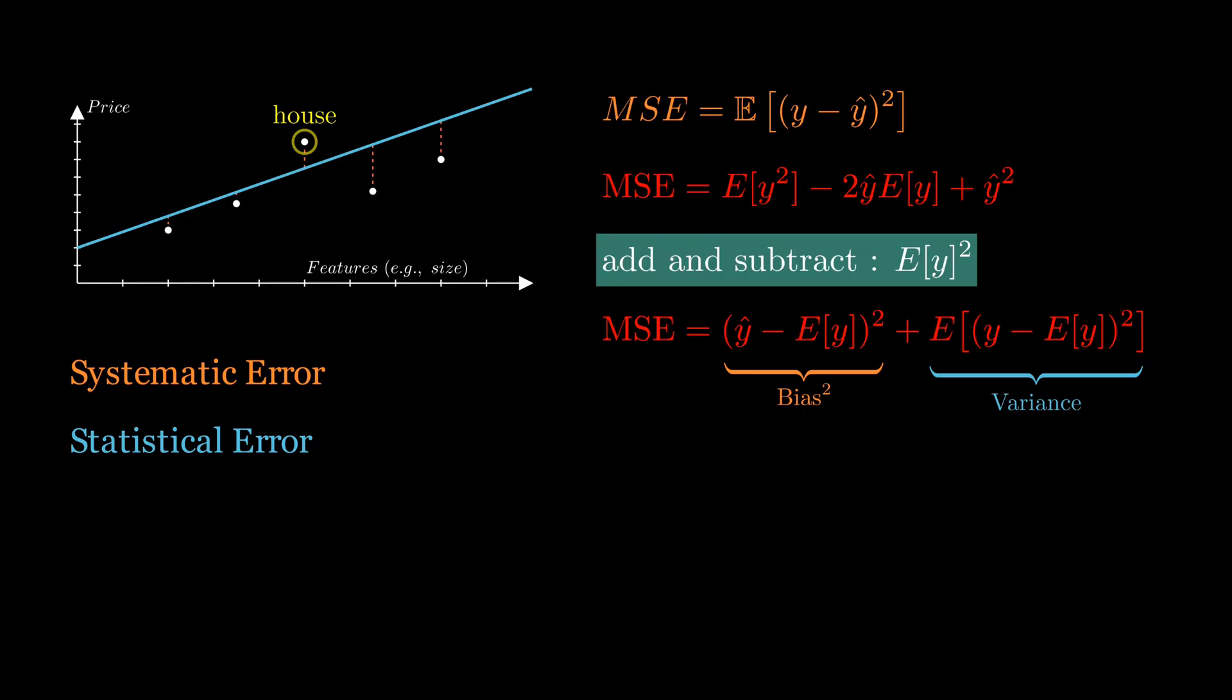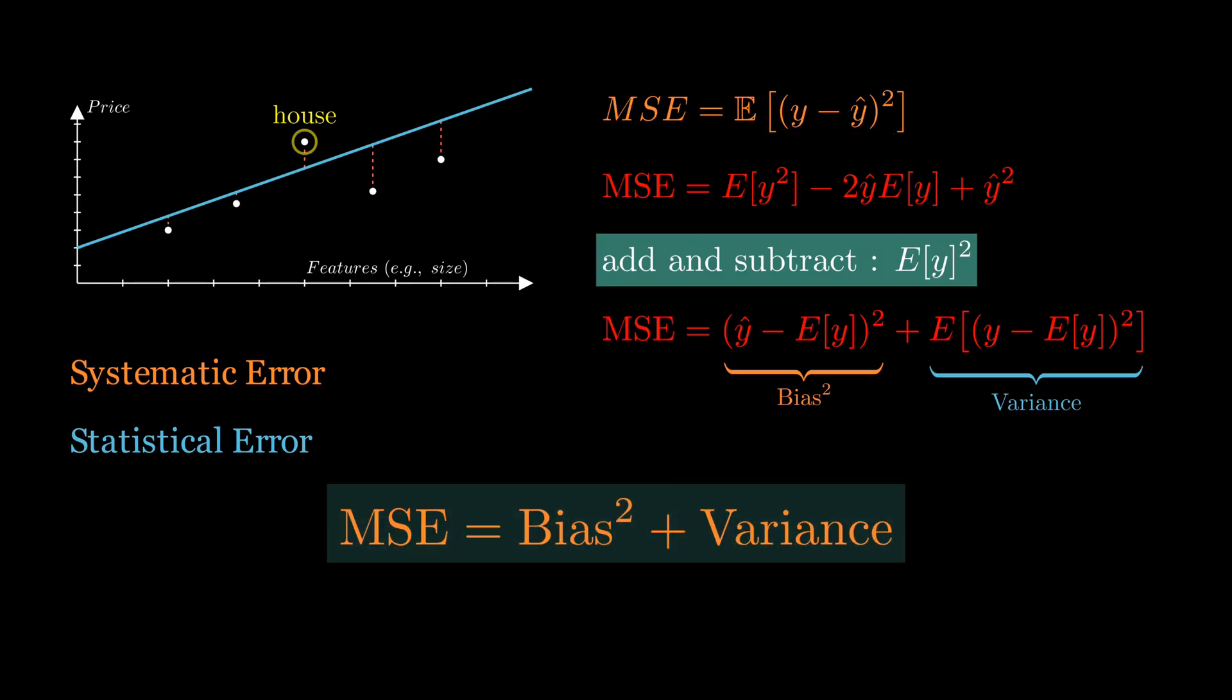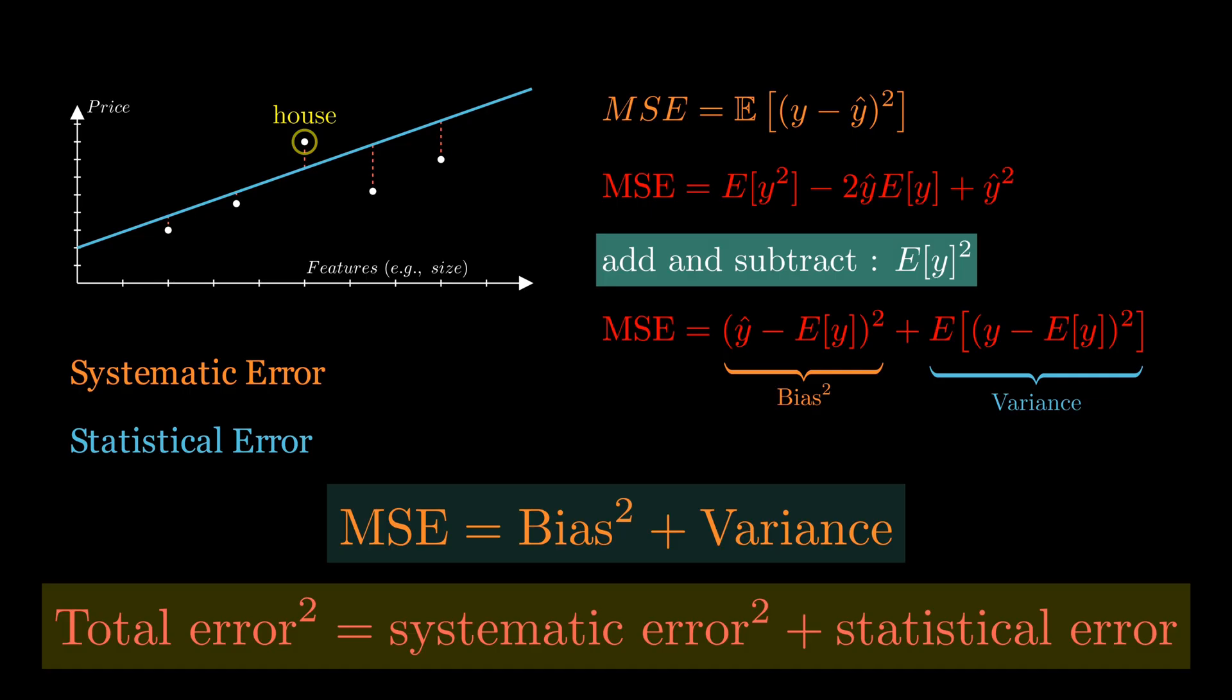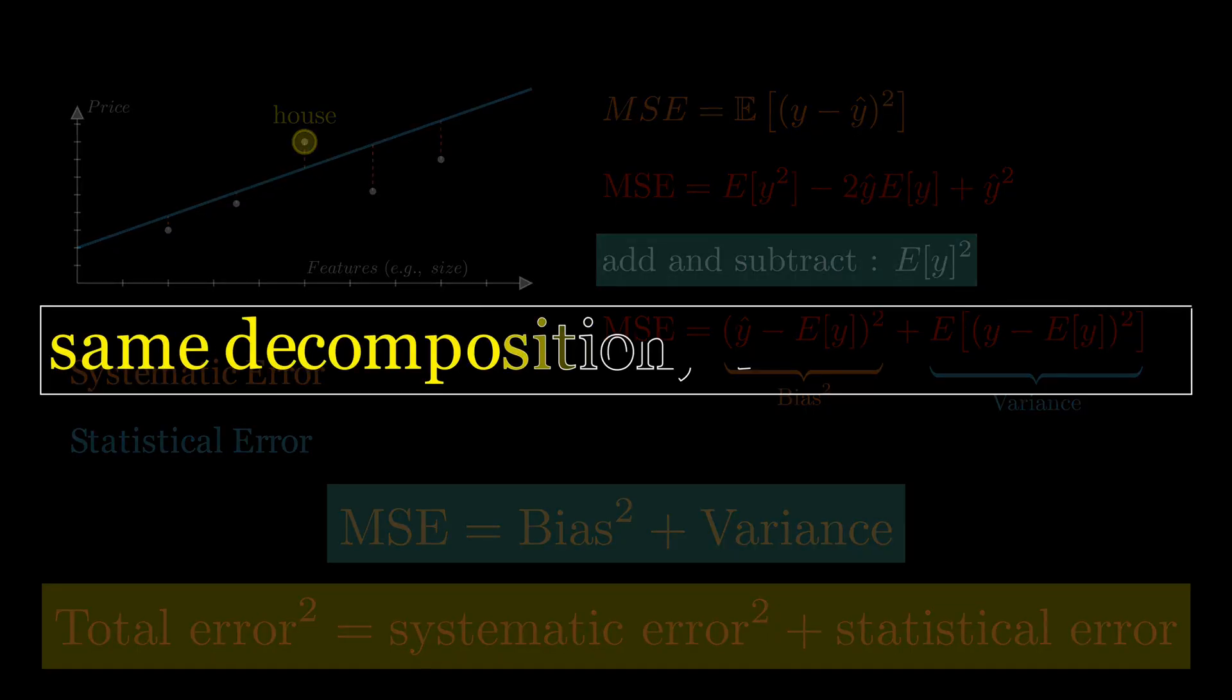So, in machine learning language, MSE is the square of the bias, plus the variance. In physics language, we refer to MSE as the square of the total error, defined as follows. The bias in machine learning is what physicists refer to as the systematic error, and variance in machine learning is just the statistical error in physics measurements. It's the same decomposition, just different names.